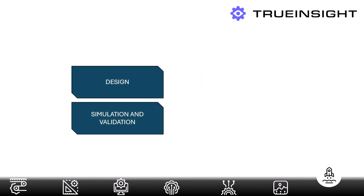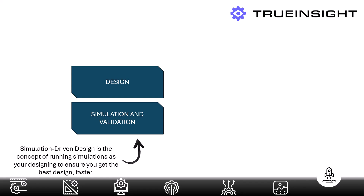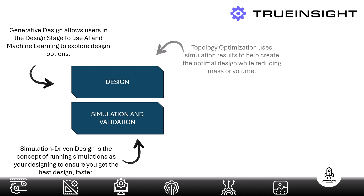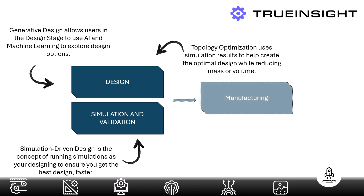So we've looked at these terms separately, but how do they relate to each other? If we go back to our design cycle, simulation-driven design would mean that the simulation is happening during the design stage, which leads to faster and more efficient designs. Generative design would help optimize the design stage by applying AI and machine learning algorithms to run a bunch of designs to help come up with the best one. And then topology optimization is taking a finished design and reducing its mass or volume while still maintaining that design intent. Then it's passed on to manufacturing.